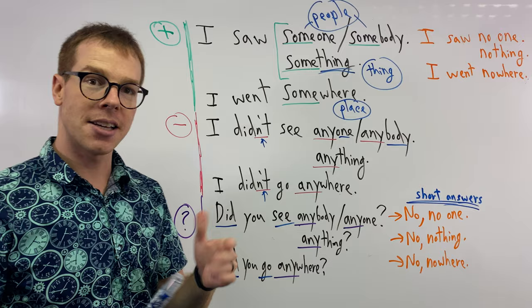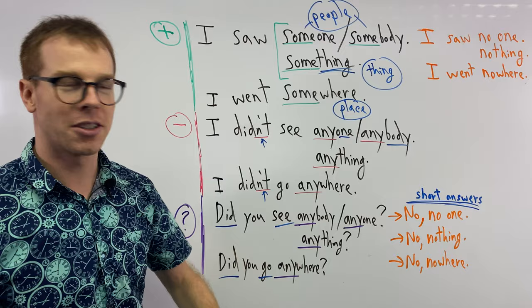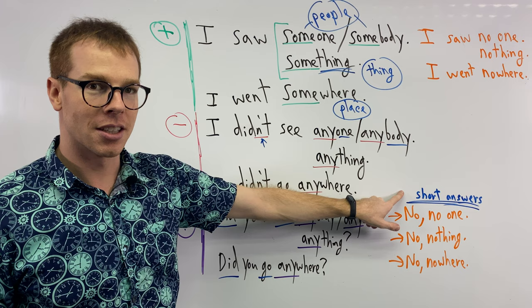Now, if I ask you these questions, I can say, did you see anyone at the shopping center? Did you see anybody on the way to work? You're like, no, no people, no one. You can use a short answer. Did you see anyone? Nope, no one.